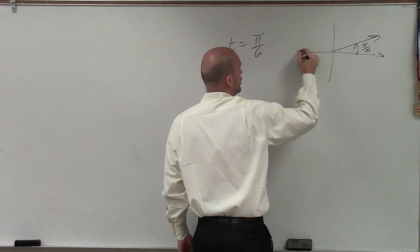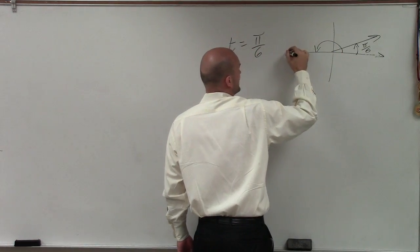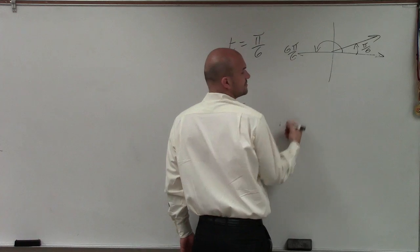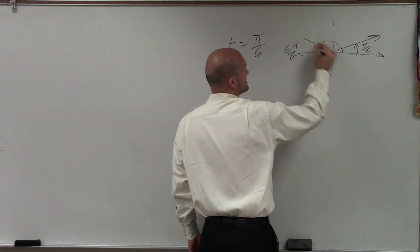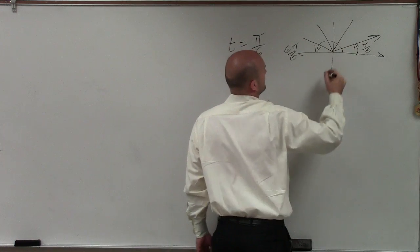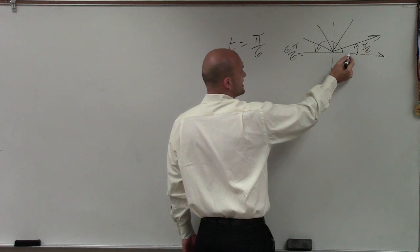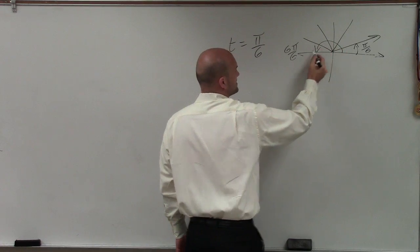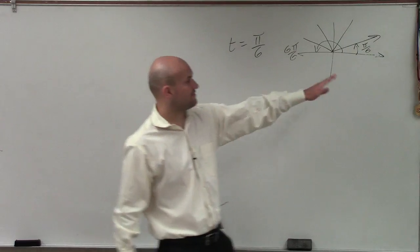Because remember, all the way around a circle would be an angle of 6 pi over 6. So if you broke that into 6: 1 pi, 2 pi, 3 pi, 4 pi, 5 pi, 6 pi. All right? So pi over 6 is just 1 up.